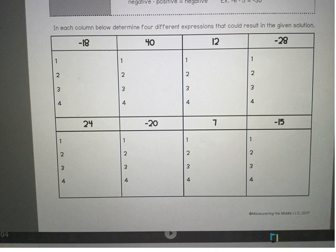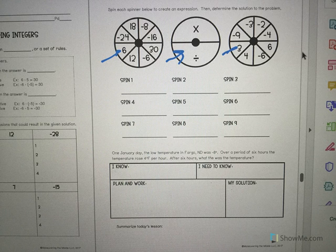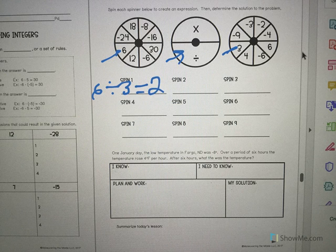I'm going to skip right over, and I see here that he wants me to spin. Let me just pretend I spun a 6 and a divide sign and a 3. That's pretty easy. 6 divided by 3, we know that is 2. It still follows our rule, because we have a positive 6 divided by a positive 3, so the signs are the same, so the answer is positive.